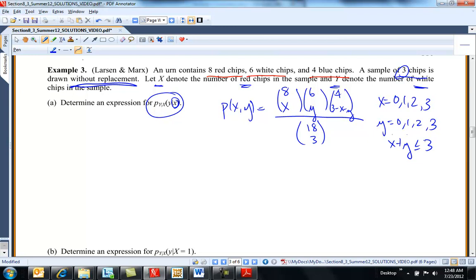And let's see what else. The marginal. So let's write the marginal over here. The marginal of X is just a hypergeometric. 18 choose 3, 8 choose X, 10 choose 3 minus X, and this is valid for 0, 1, 2, or 3.